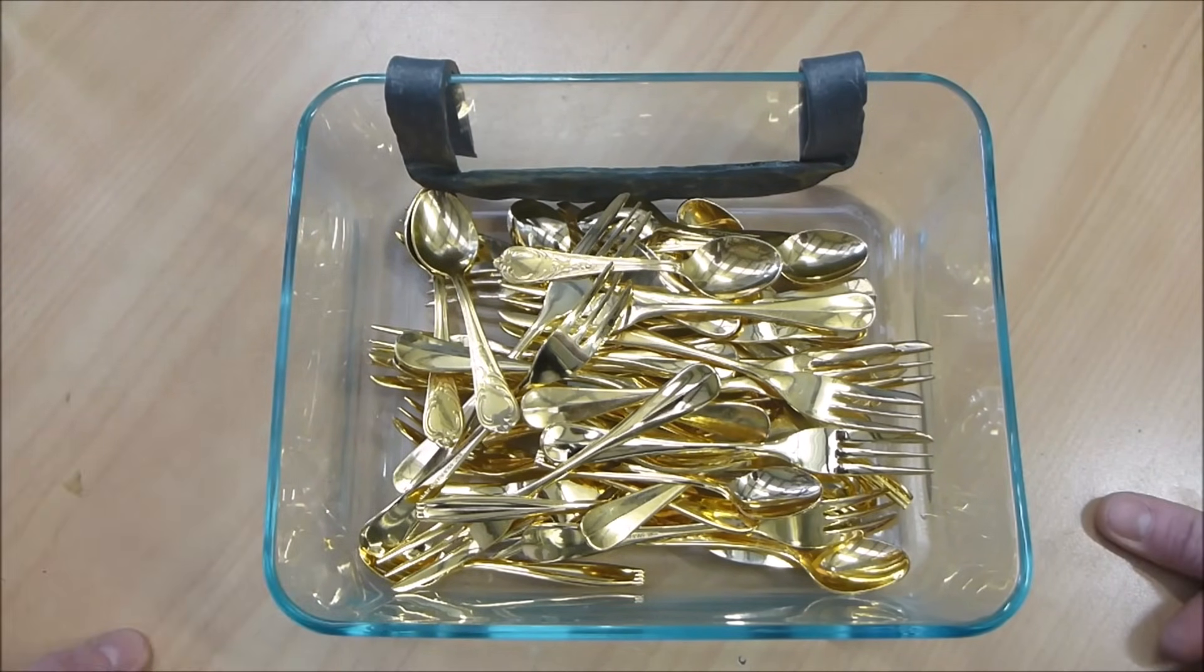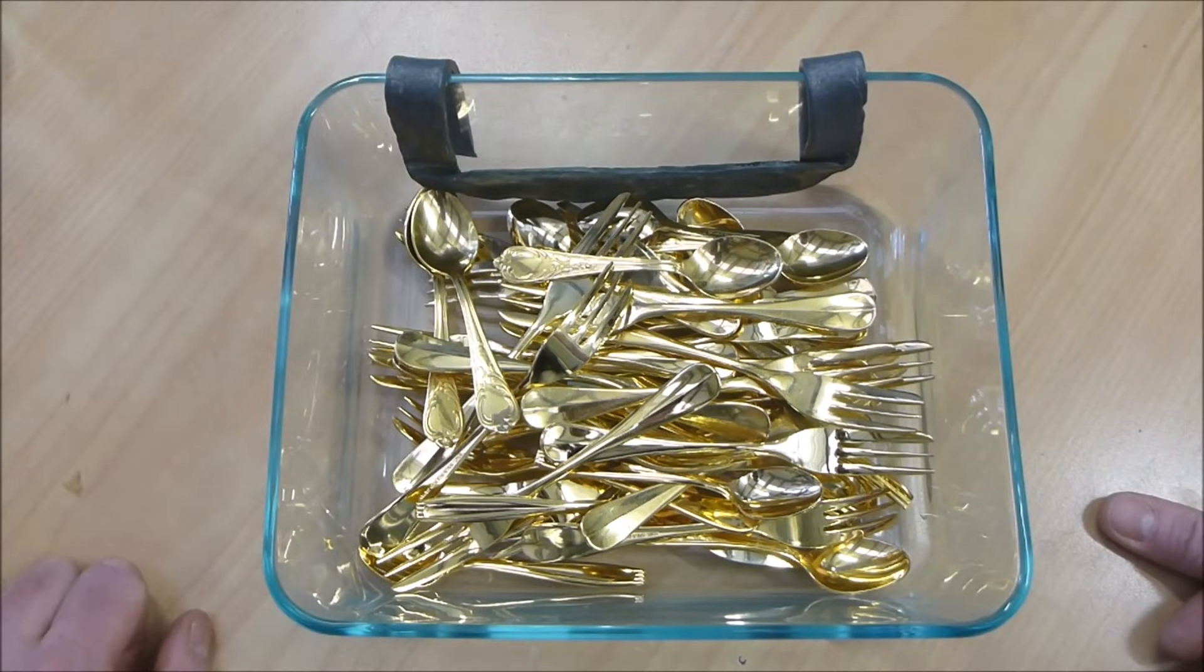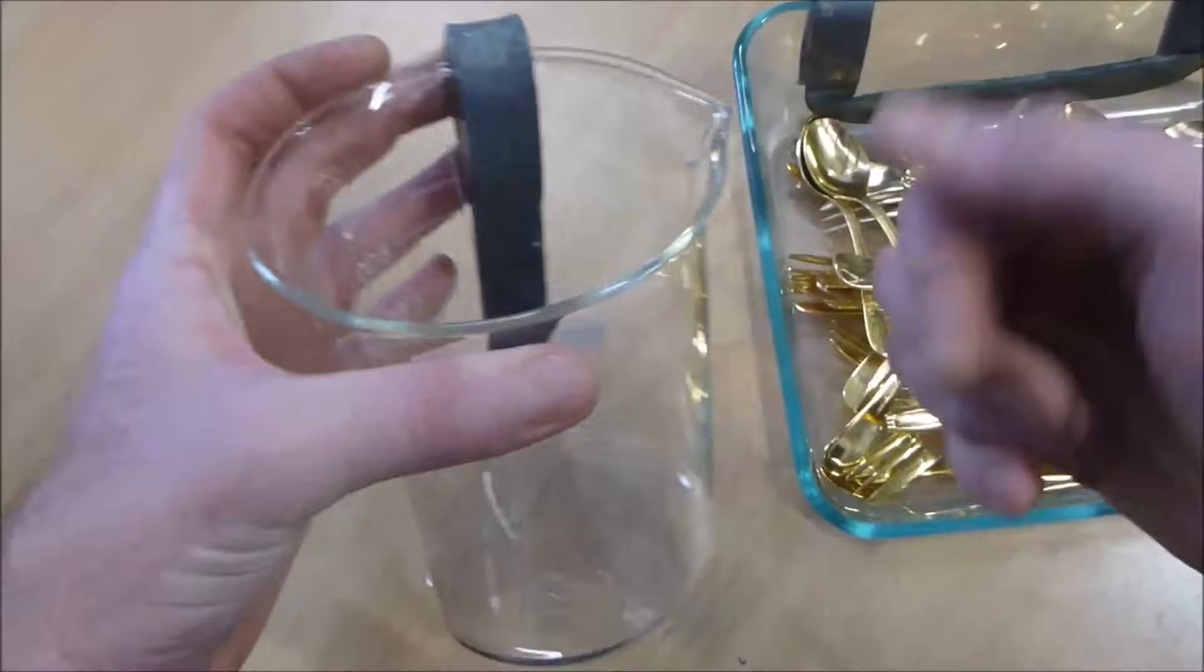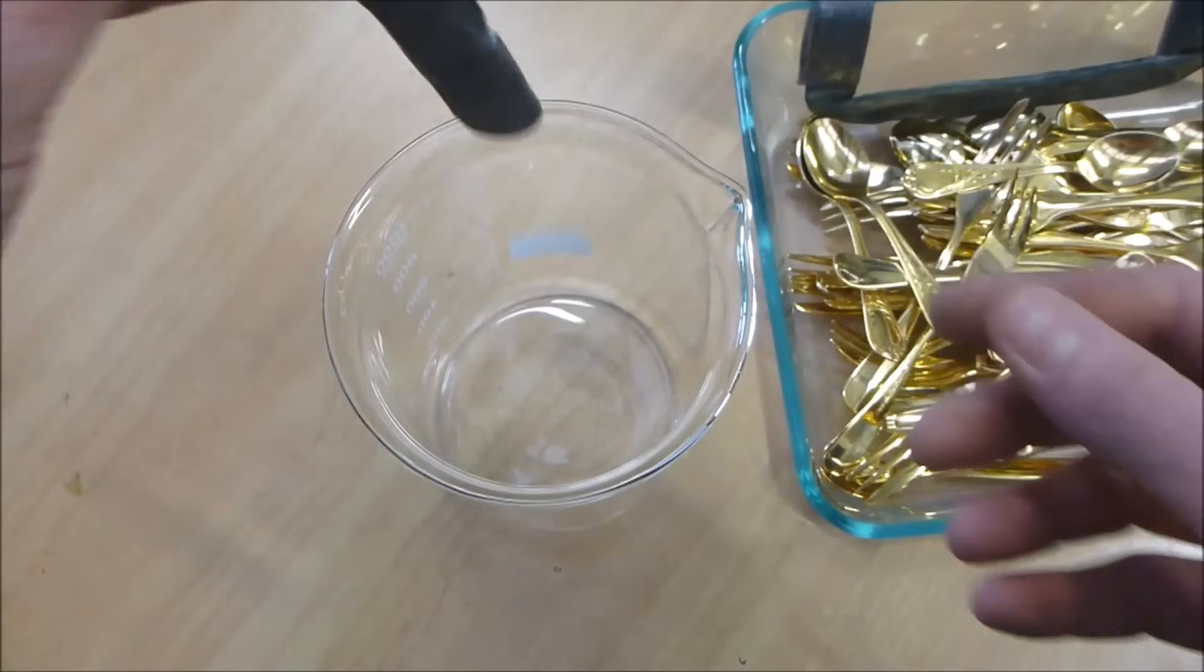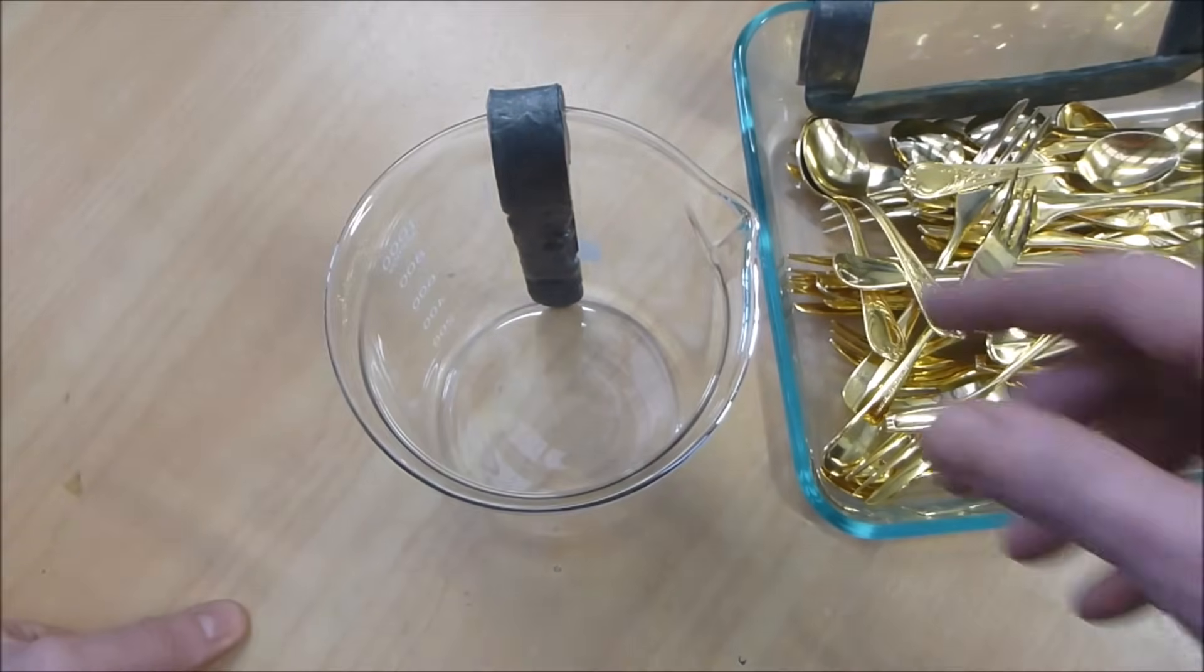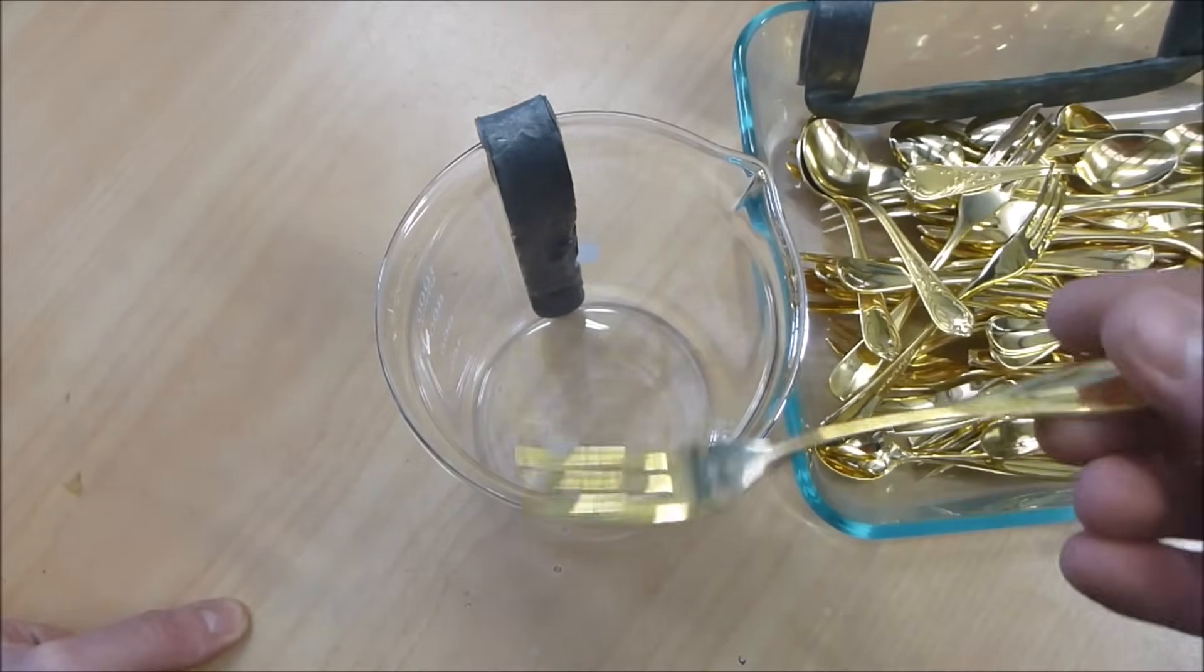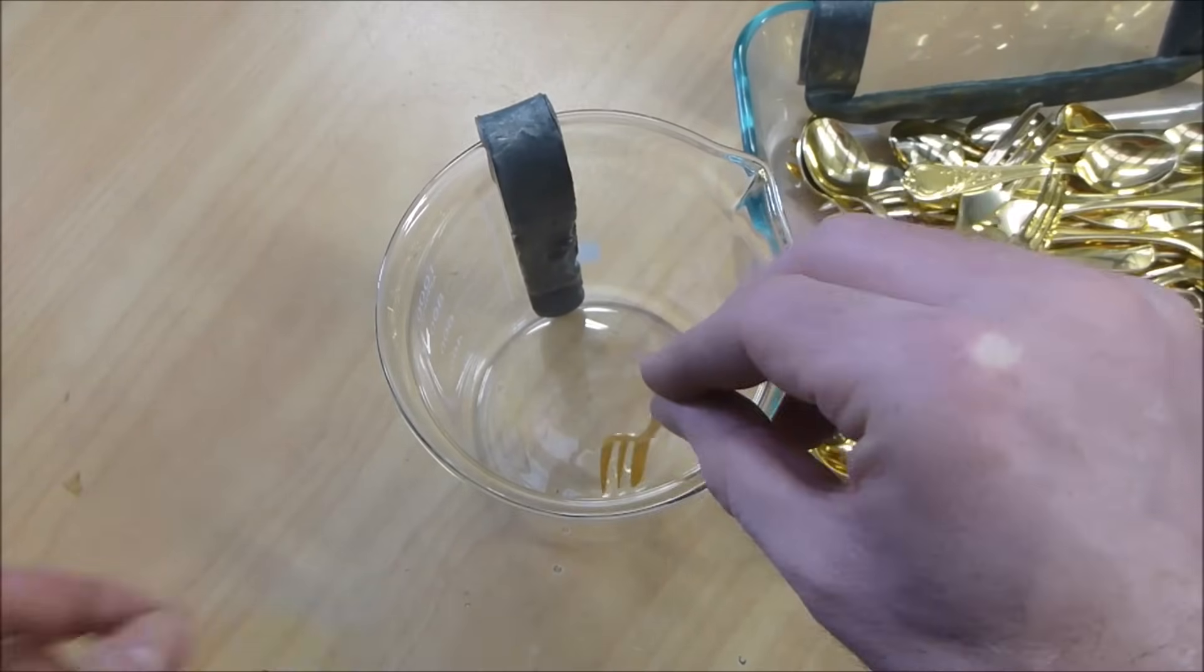So what we're going to do is a standard sulfuric acid deplating cell. This is the old one that I used to use with the basket for deplating pins and that kind of thing. I've got one of my little lead anodes that I've folded over so it'll just sit in there.